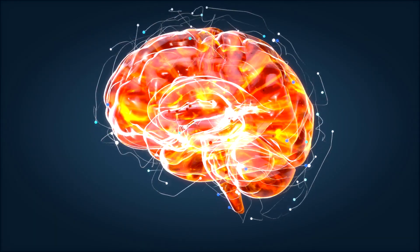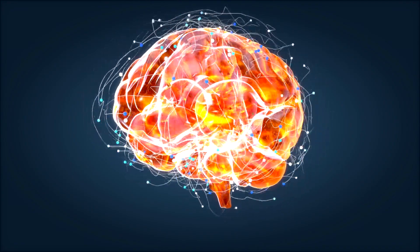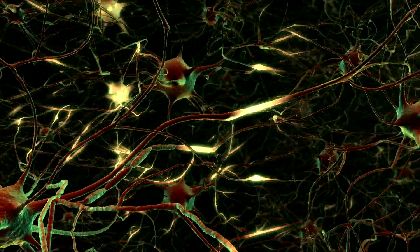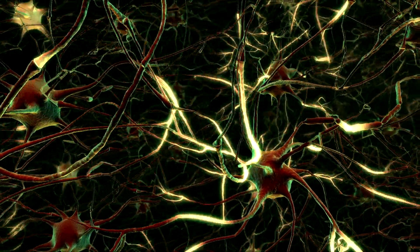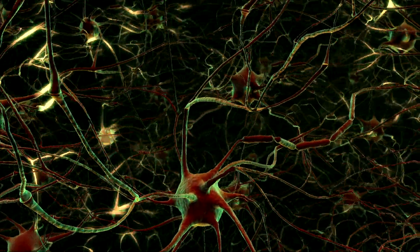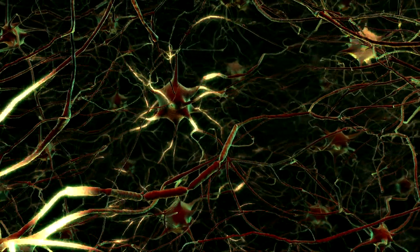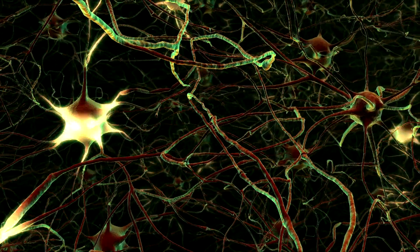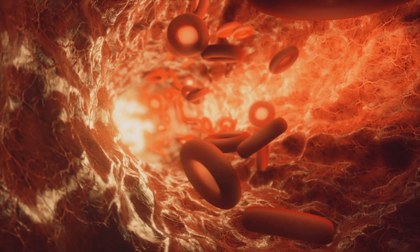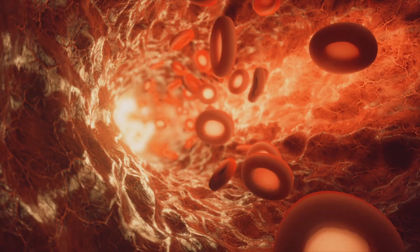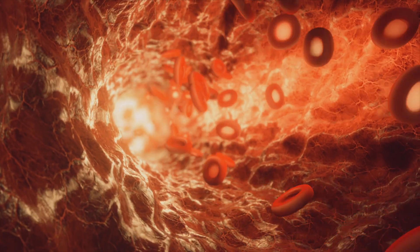During a migraine attack, the brain's neurons become hyper-excitable, causing a wave of electrical activity that spreads across the brain. This wave of activity is believed to cause the release of chemicals such as serotonin, which can cause blood vessels in the brain to constrict, leading to a decrease in blood flow and the characteristic headache pain.